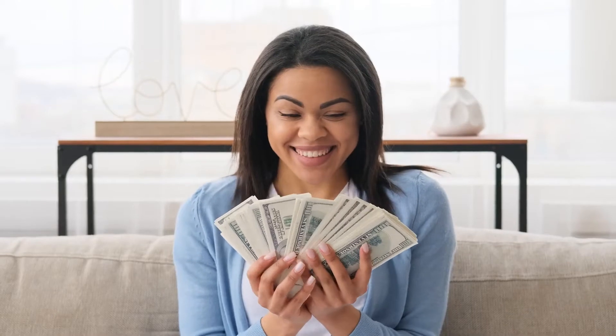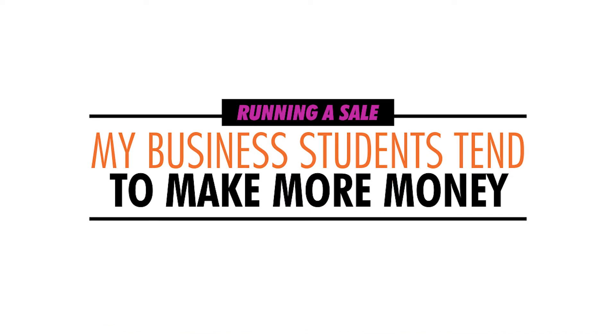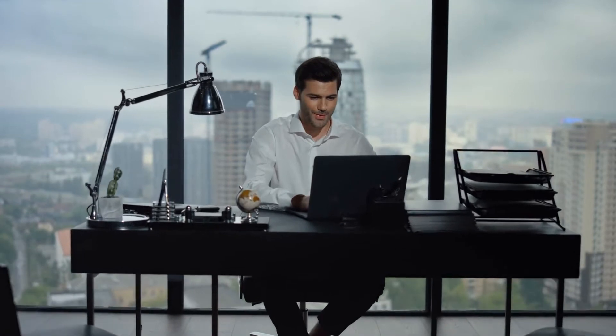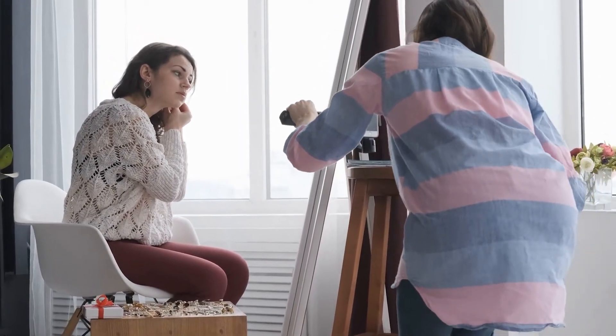My six-figure, multiple six-figure, and even my seven-figure students know that advice actually pays off. Even my handmade business students who are running a sale once a week on average tend to make more money, eventually earning themselves into a whole new tax bracket by making more offers. But two sales a month is a minimum. So here's how the Instagram Reels you create on behalf of your business factors into all of this: once you've planned your two sales promotions for the month — minimum — and marked those days off on your calendar, you'll know that on those days you publish Instagram Reels, they should be sales-based in terms of their theme or purpose.